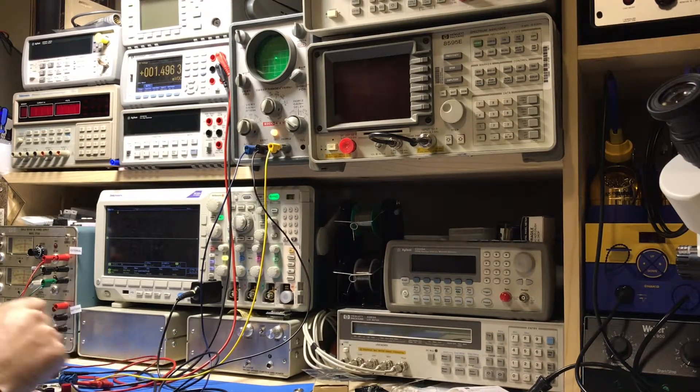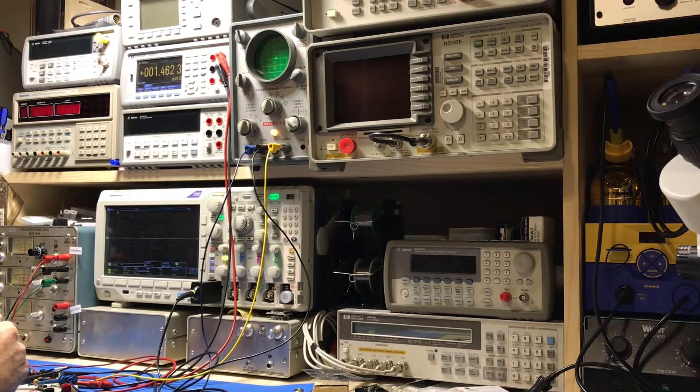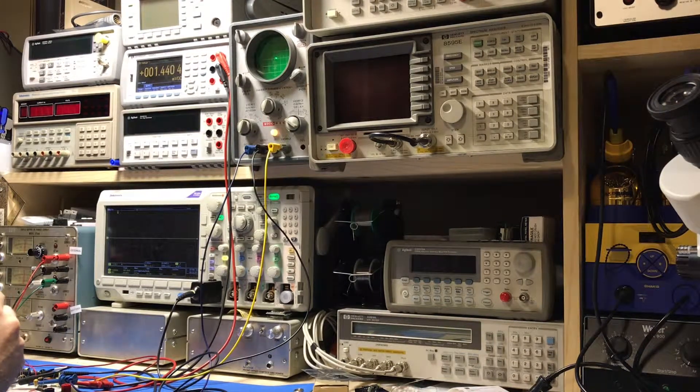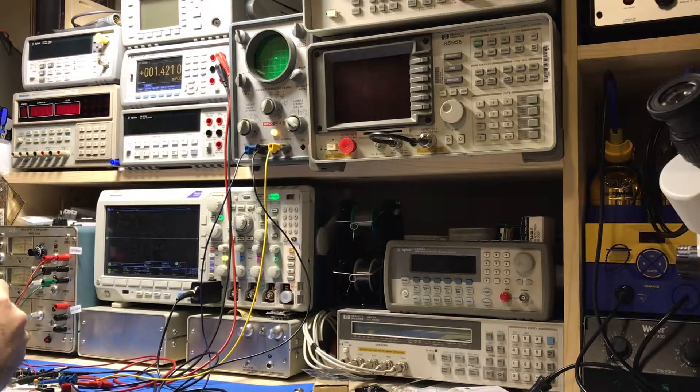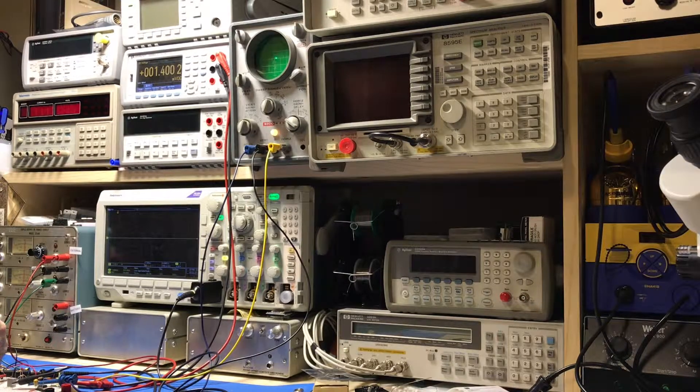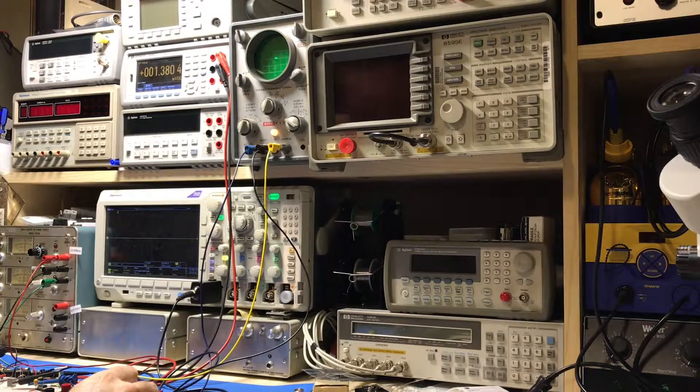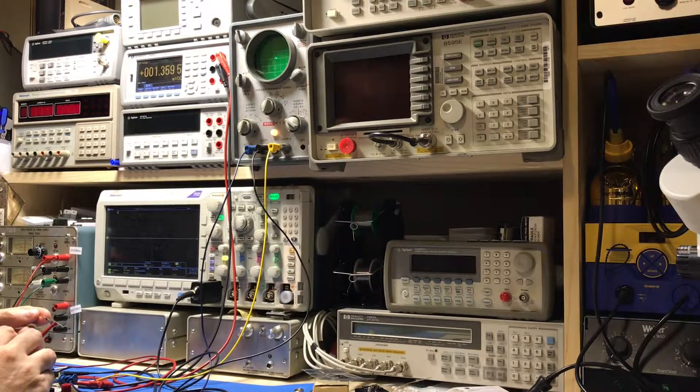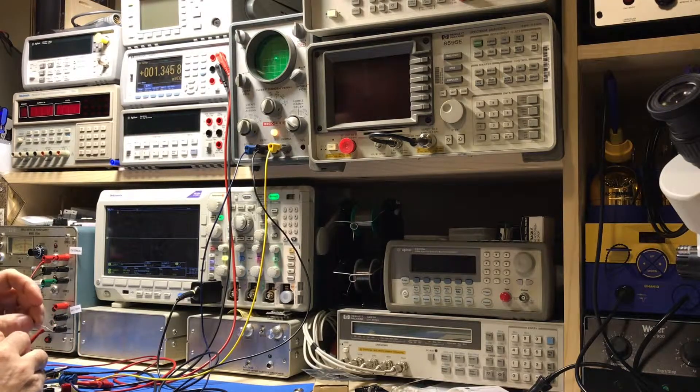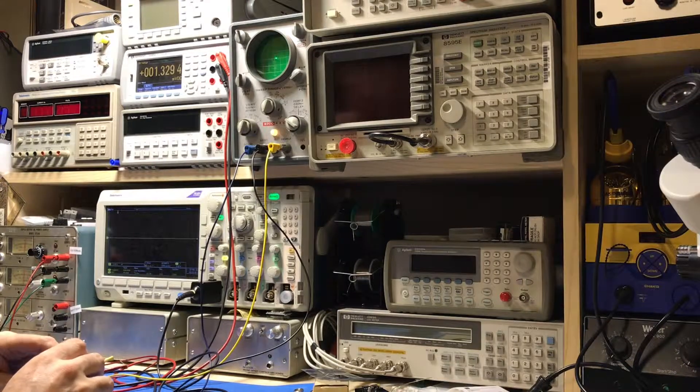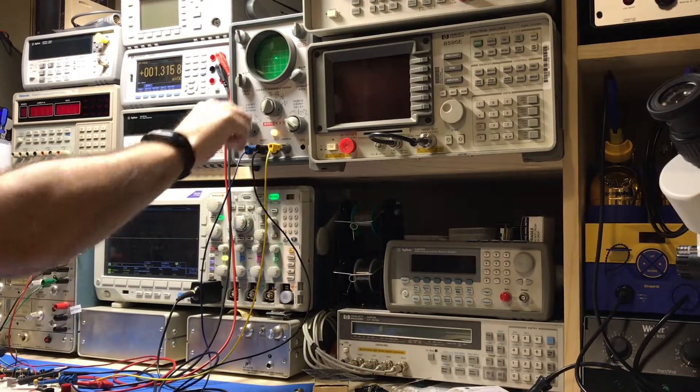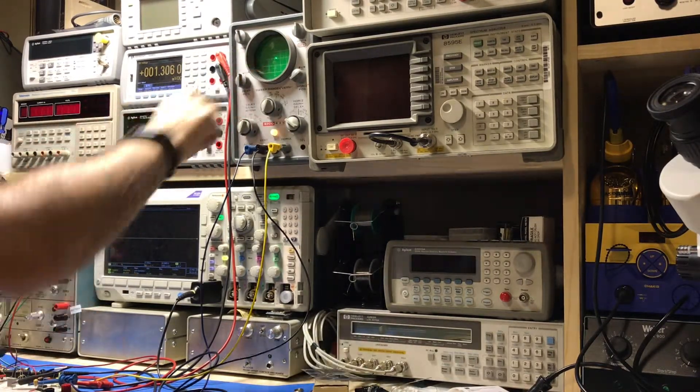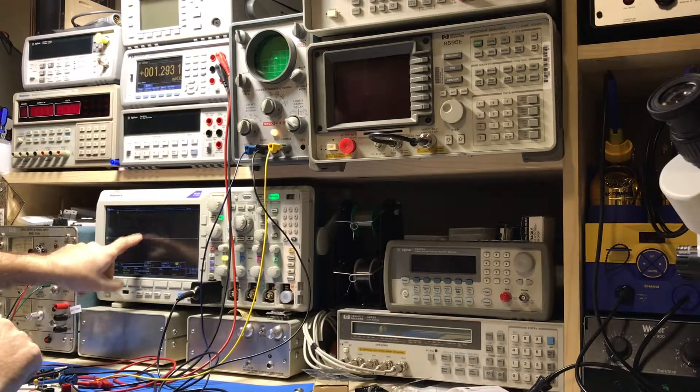Now we'll put a device in—I've got a 1N4457, just a little silicon diode—we'll put that in circuit and we'll look at what that looks on the screen. So right now we've got nothing on the screen because we have no signal applied.